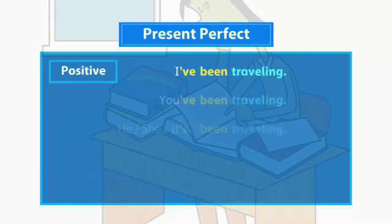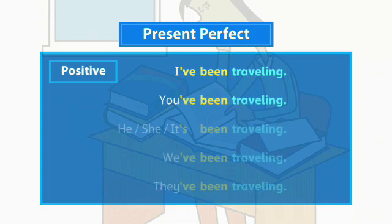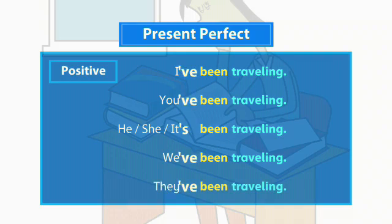We form positive sentences in the Present Perfect Continuous like this. We often use short forms of have and has, especially in spoken English.